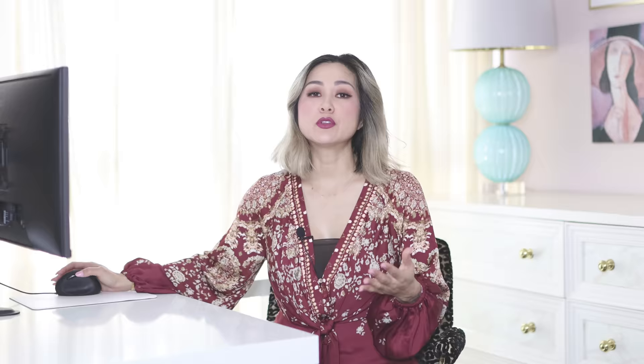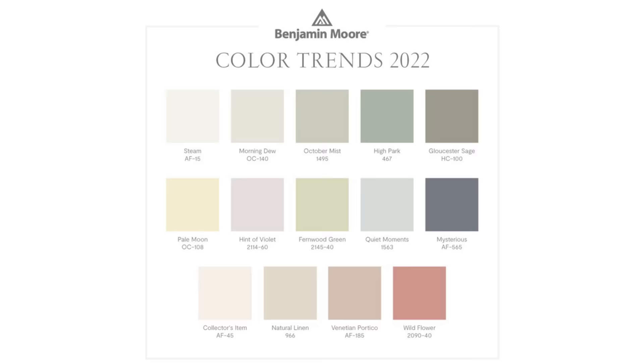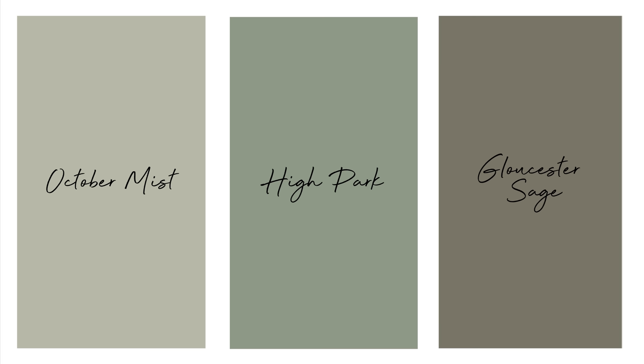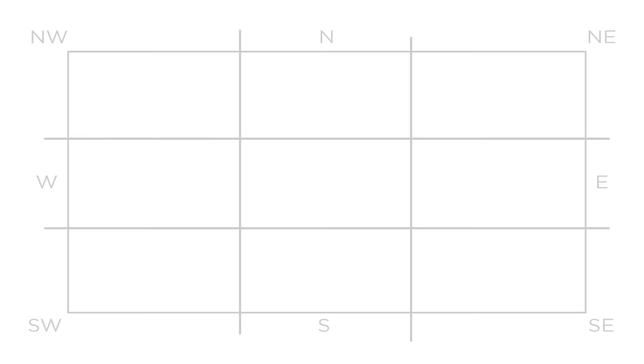Now for the fun part — let's talk about Benjamin Moore's paint color trends for 2022 and how that relates to the feng shui of your home. If you look at all the color trends across the market, from Benjamin Moore to Farrow and Ball to Pantone to Behr, you'll see that green is huge for 2022. A lot of design, whether fashion or interiors, gravitated toward earthy, natural, organic elements. In feng shui, green corresponds to the wood and earth elements, and the northeast and east corners of your home are perfect for these green hues. Benjamin Moore's October Mist, High Park, and Gloucester Sage are all greenish tones — if you want to enhance the family and health corner or the knowledge and self-cultivation corner, these would be the colors to choose.